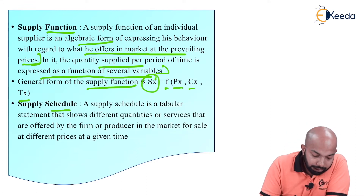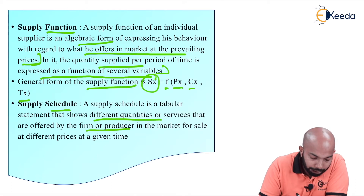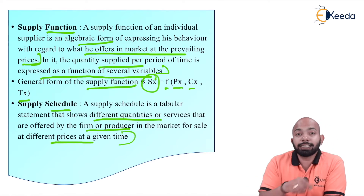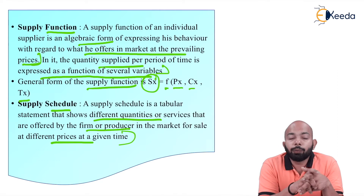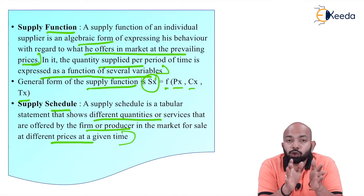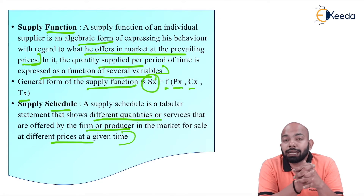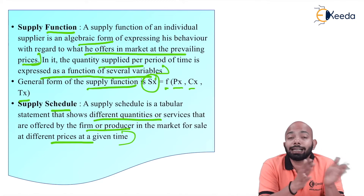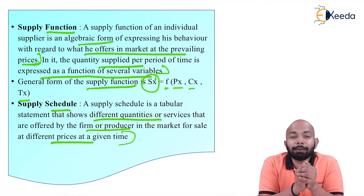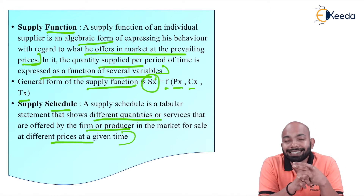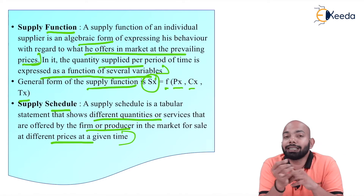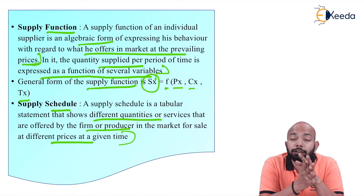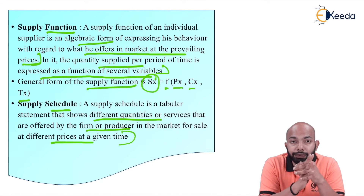The next part is the supply schedule. A supply schedule is a tabular form that shows different quantities of goods or services offered by the firm or producer in the market for sale at different prices at a given time. Similar to the demand schedule, here the supply schedule tells us what quantity is being offered by different producers at different prices — the key difference being that demand involves consumers, while supply involves producers.